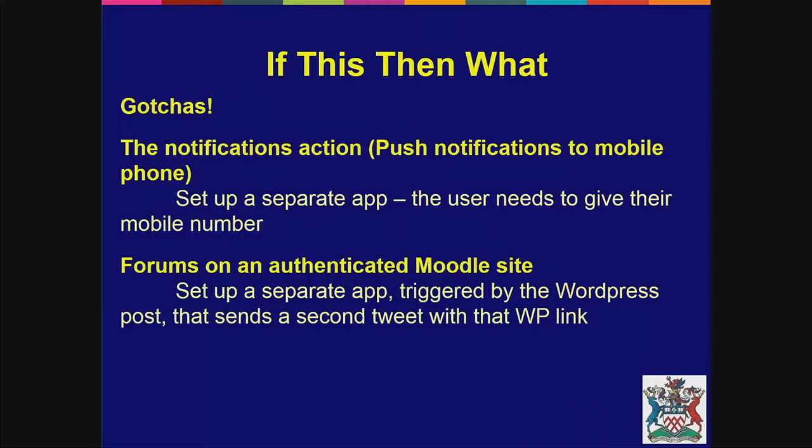And there are the gotchas. Notifications need to be set up separately. Secondly, for Twitter and WordPress, you give If This Then That your credentials to set up — that might be a concern to some people, though it hasn't been to me. And the forums being on an authenticated site needed a separate WordPress link to be given.